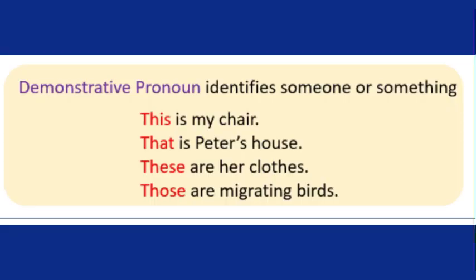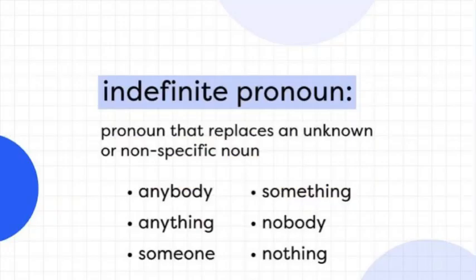Demonstrative pronouns کی مزید examples: 'This is my chair' — 'this' سے اشارہ کر رہے ہیں۔ 'That is Peter's house' — یہاں ایک particular place کی طرف اشارہ ہے۔ 'These are her clothes' — قریب پڑے کپڑے، جمع، اس لیے 'these'۔ 'Those are migrating birds' — migrating birds یعنی جو پرندے سردی گرمی کے حساب سے ایک جگہ سے دوسری جگہ move کرتے ہیں — وہ دور ہیں اور بہت زیادہ ہیں اس لیے 'those' کا pronoun استعمال ہوا۔